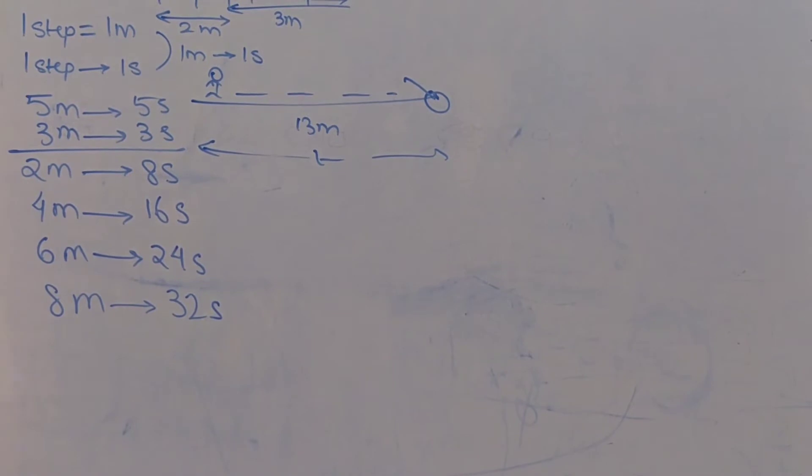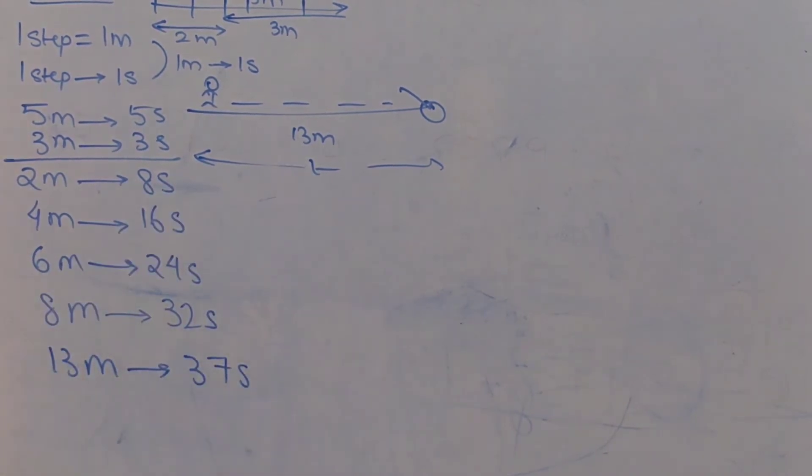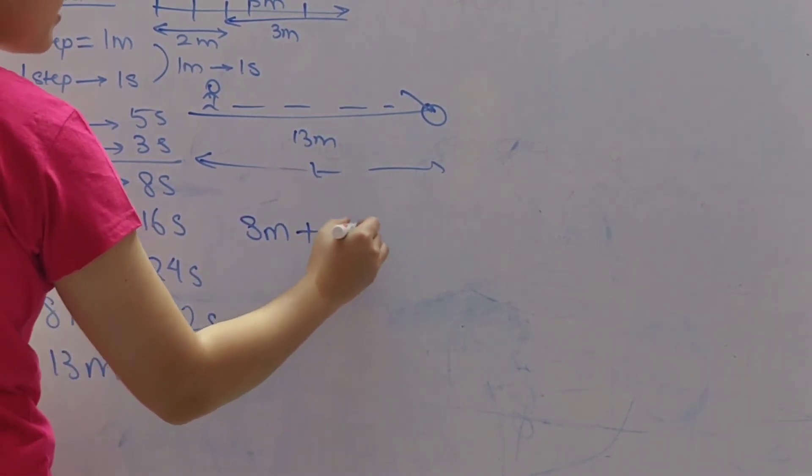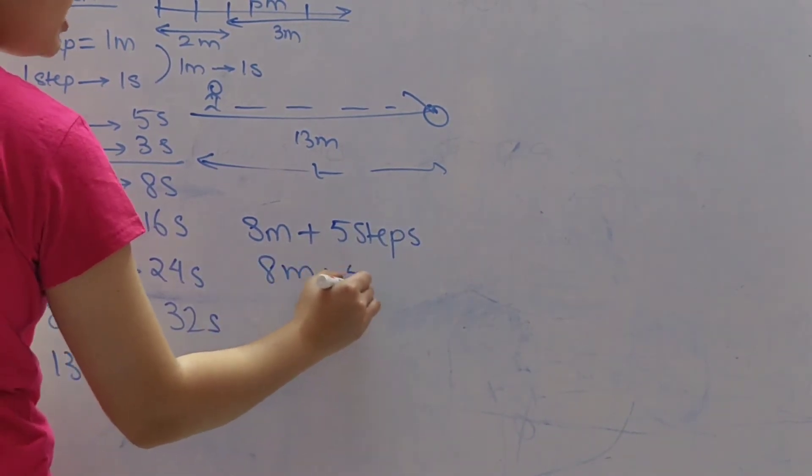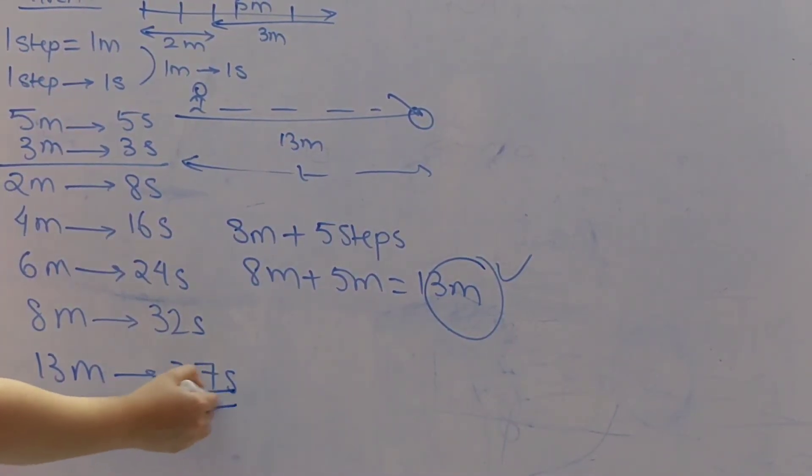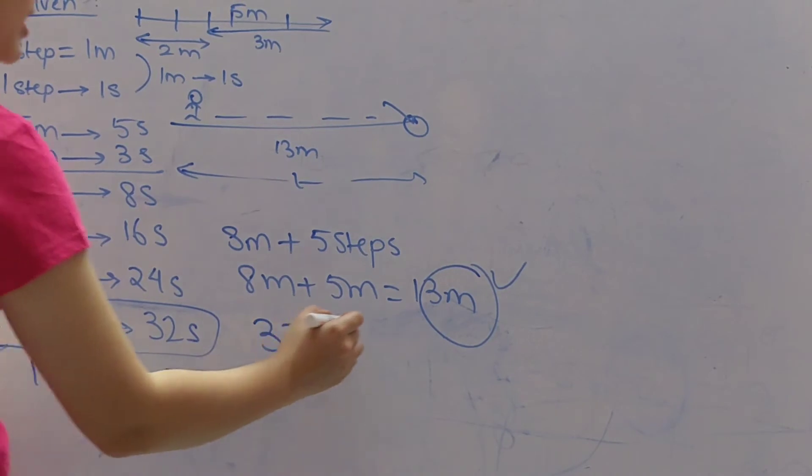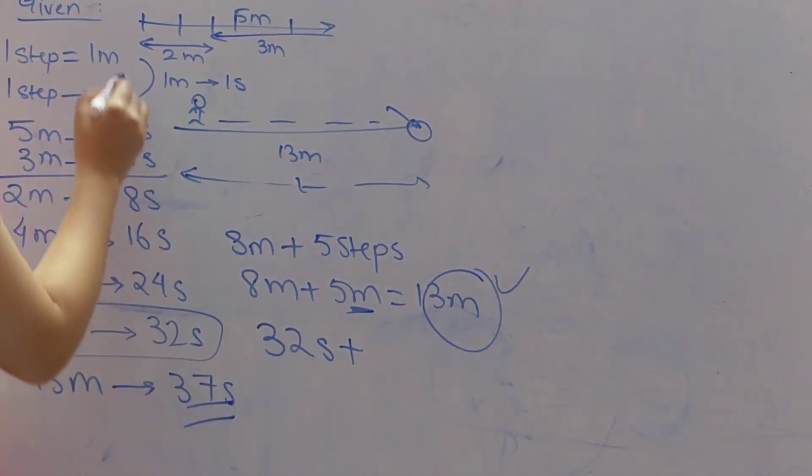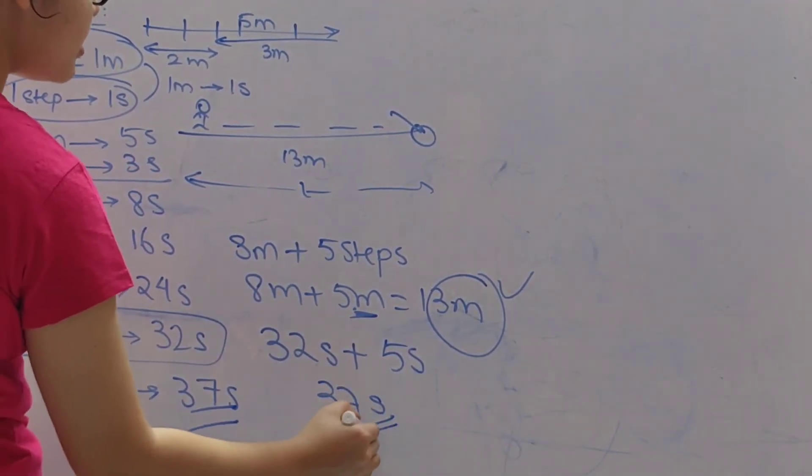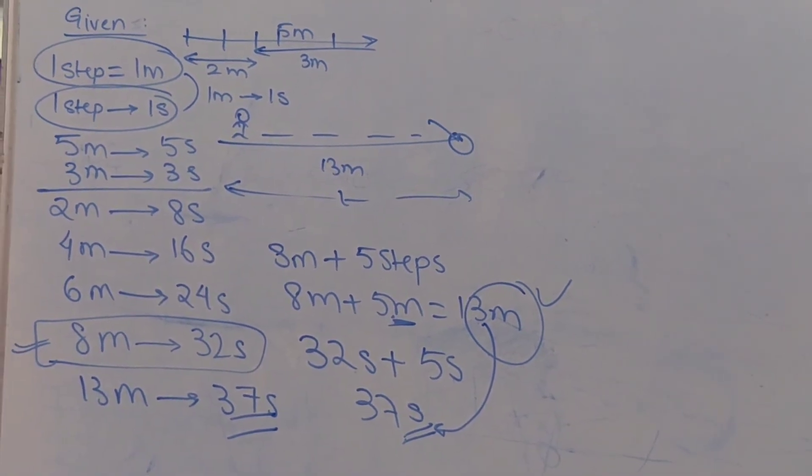So analyze the situation. Now if he wants to travel 13 meters he will take 37 seconds. How is that? 8 meter plus he has to take 5 steps, because each of his step is 1 meter. So now he has traveled 13 meters. So he has already traveled for 32 seconds till here, plus for every 1 meter he takes 1 second. So for 5 meters he will take 5 seconds more. So we get 37 seconds. Note this term and we will move on to the graph.